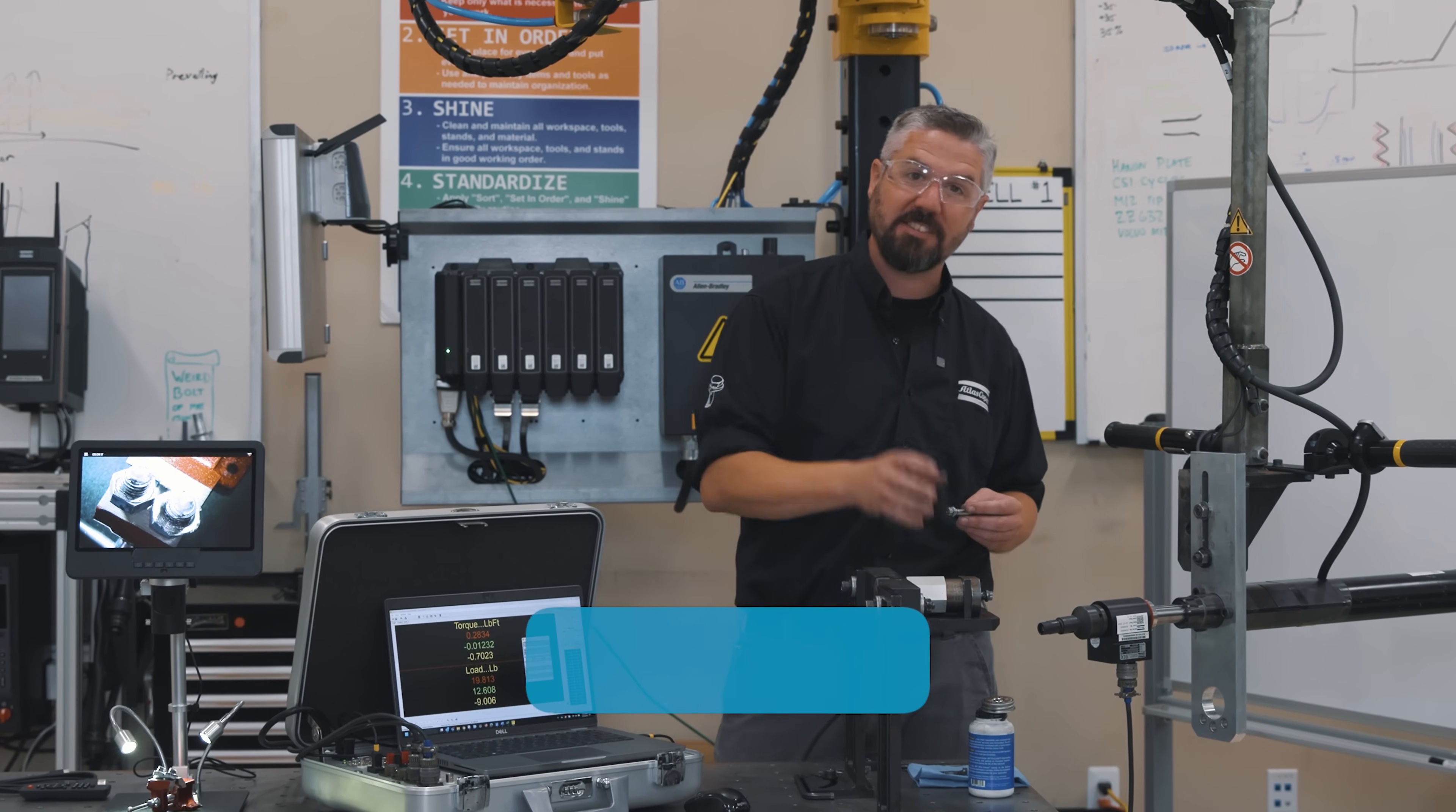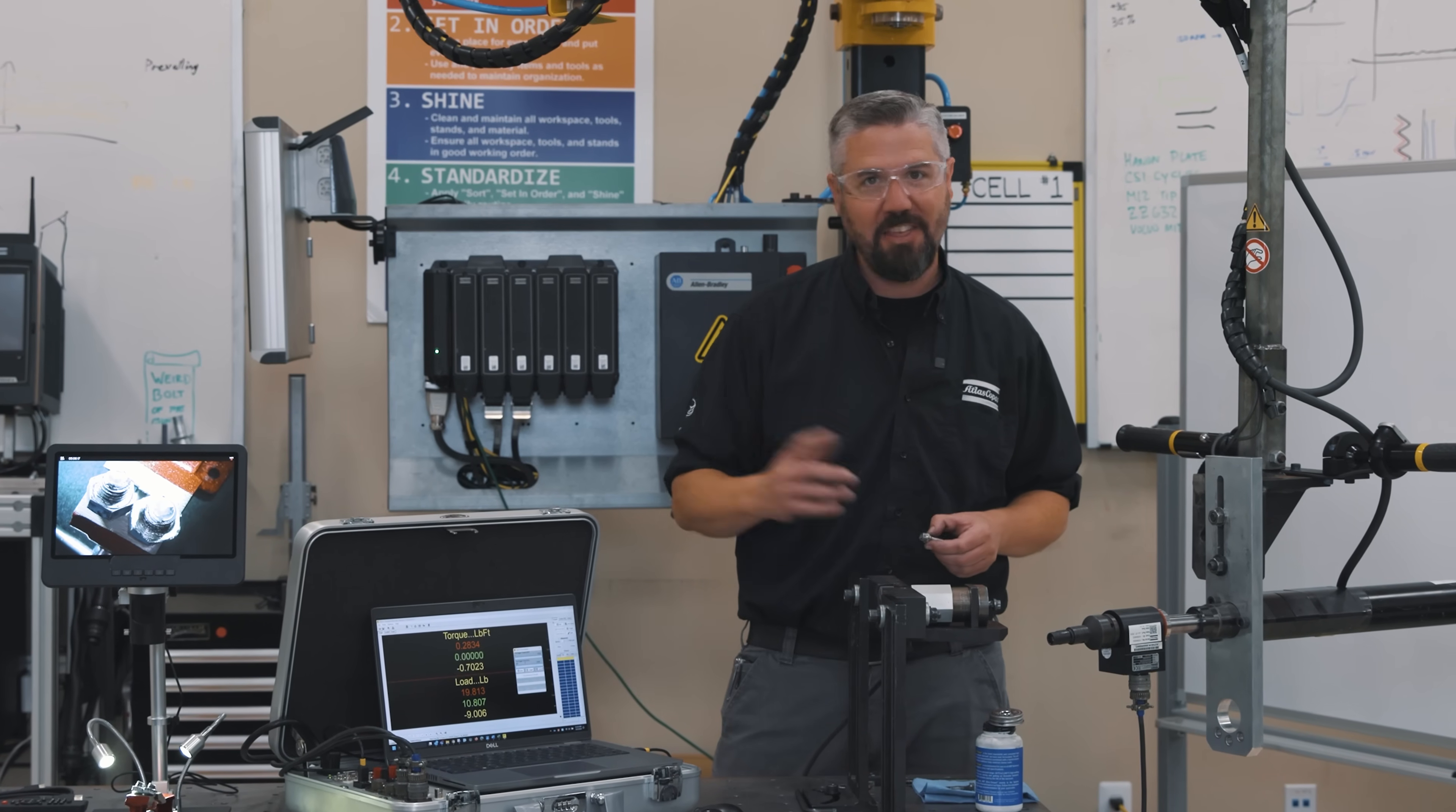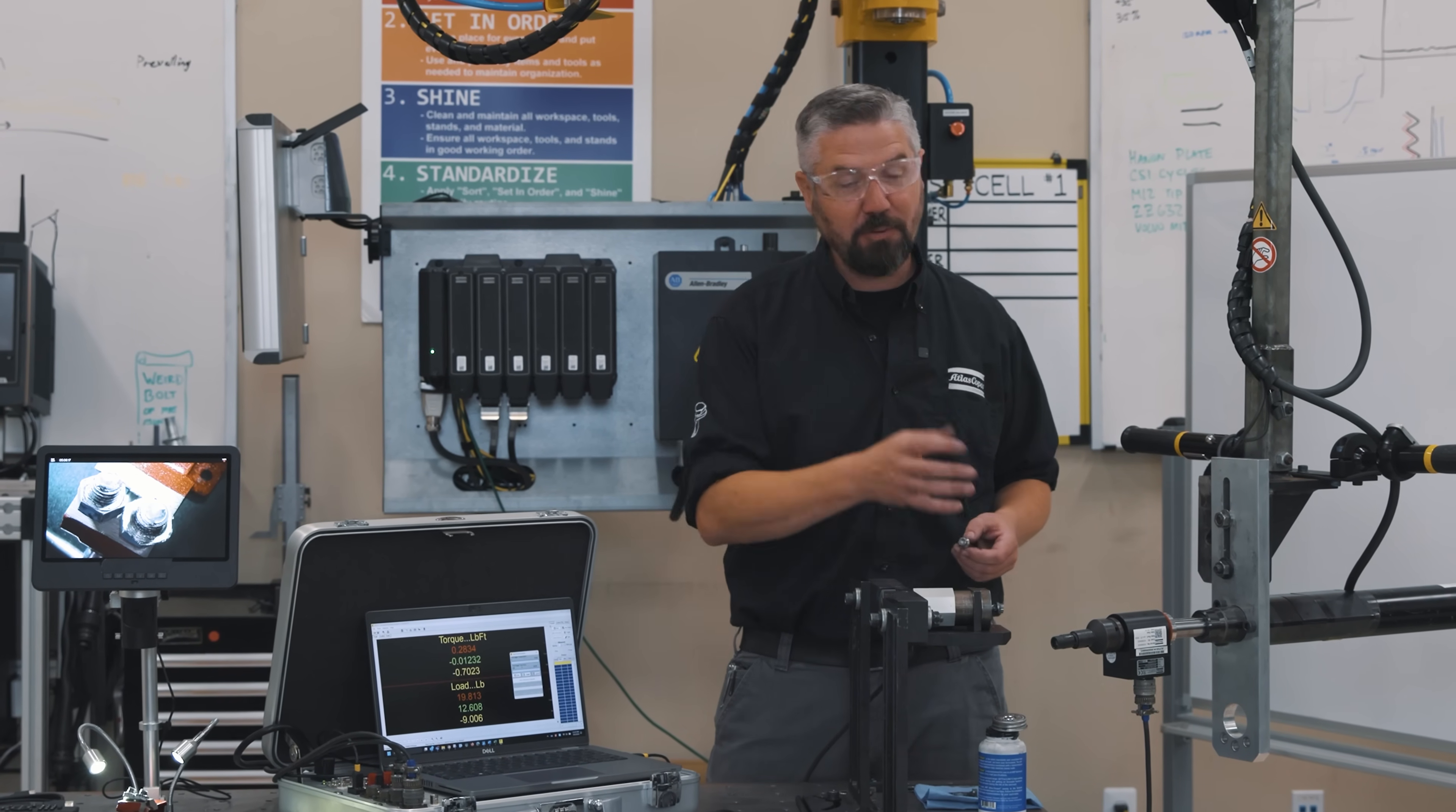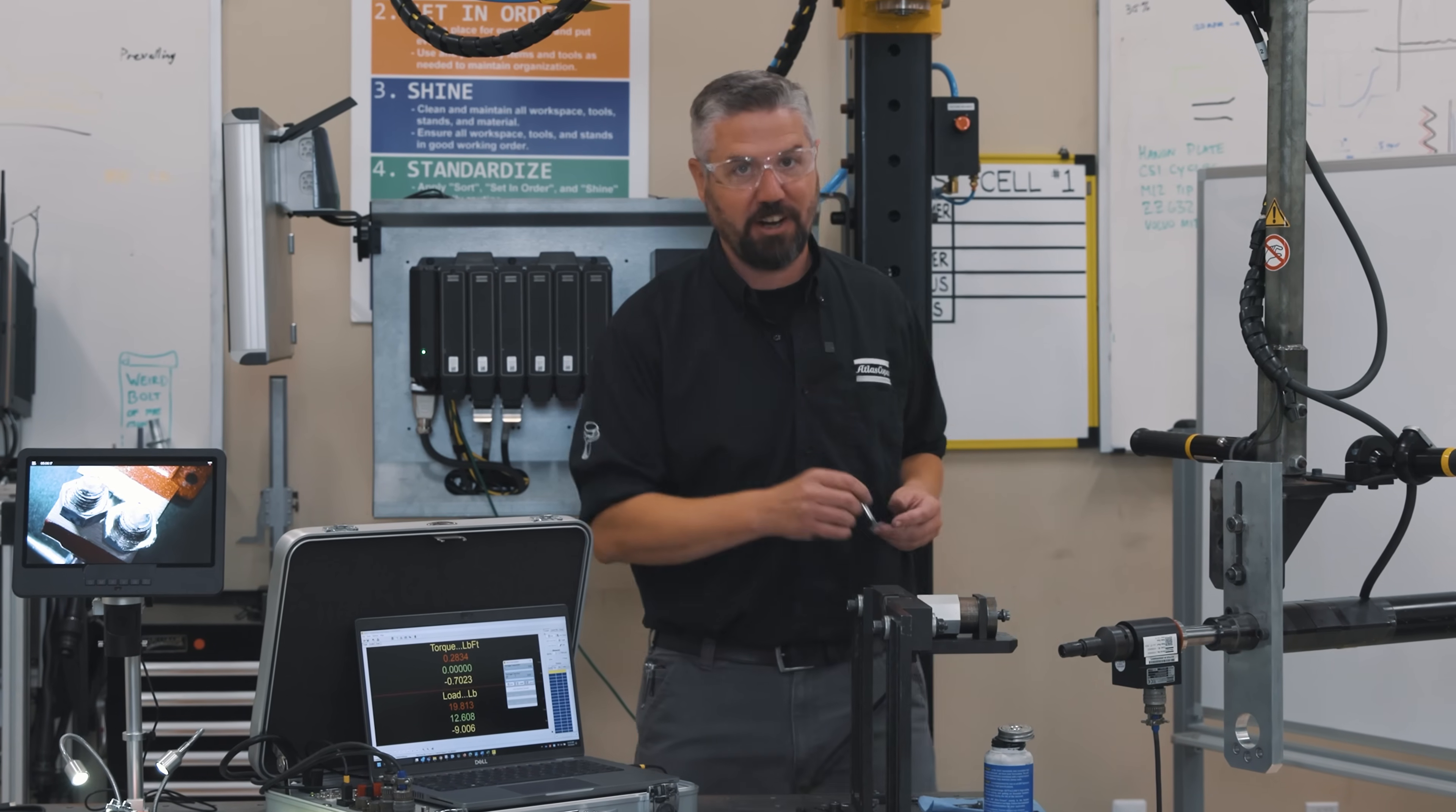Let's put the recommended 75 foot pounds of torque into this joint and see how much clamp load we generate, and then we'll remove all the stops and hopefully get enough torque to break this bolt and see what it's really capable of.